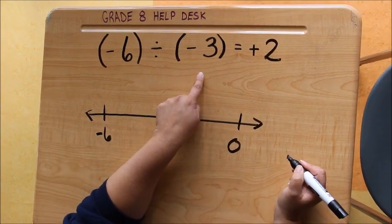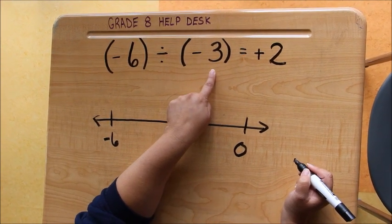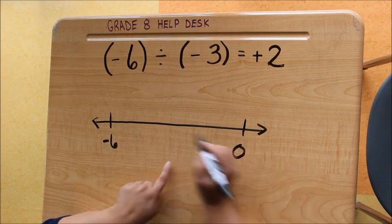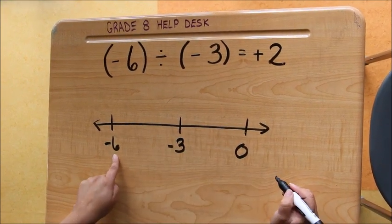Your divisor represents the size or the number in your jumps, so in this case it's 3. We want 3 in each of our jumps, so we'll go from 0 to negative 3. 3 more takes us to negative 6.